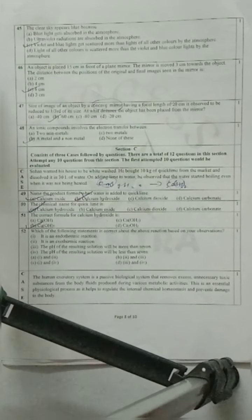Question 46: An object is placed 15 centimeter in front of the plane mirror. This is your object. The mirror is moved 3 centimeter towards the object. What did we do? The mirror moved 3 centimeters. The distance between the position of the original and the final - that's 6 centimeters is the answer.